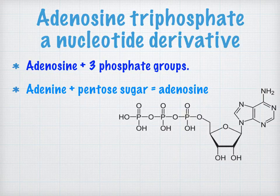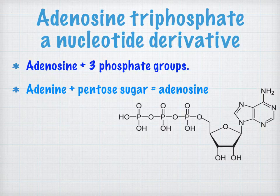Adenosine triphosphate, or ATP, is a special example of a nucleotide. It's composed of adenosine — adenine (a nitrogenous base) plus a pentose sugar — with three phosphate groups attached. ATP is the energy currency for living organisms. Phosphate groups can be cleaved off in hydrolysis reactions, releasing energy to allow other chemical reactions to take place.